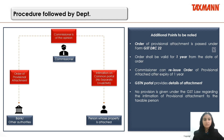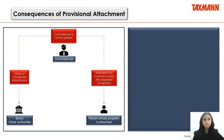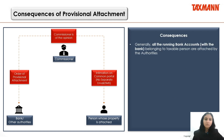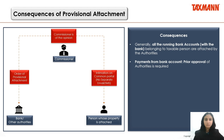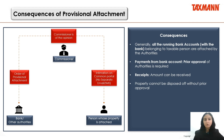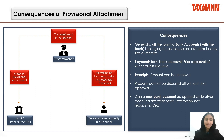The GST portal provides details of the attachment, though no provision under GST law mandates providing intimation to the taxable person. Generally, the Commissioner passes orders in relation to all running bank accounts of the taxable person. While the account is attached, payments cannot be made without prior approval of the authorities, though receipts can be made on a normal basis. Property cannot be disposed of without prior approval of the officer. Opening a new bank account while other accounts are provisionally attached is not recommended, as the bank will already have information about such attachments.